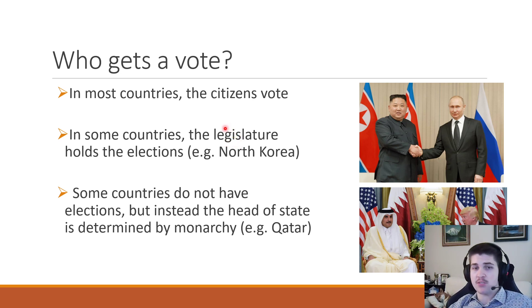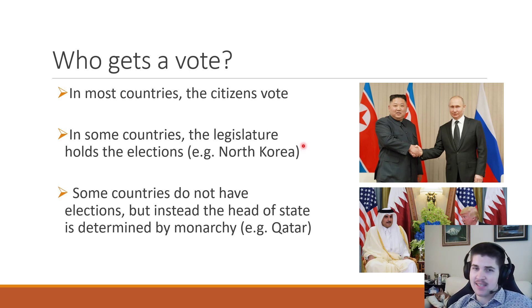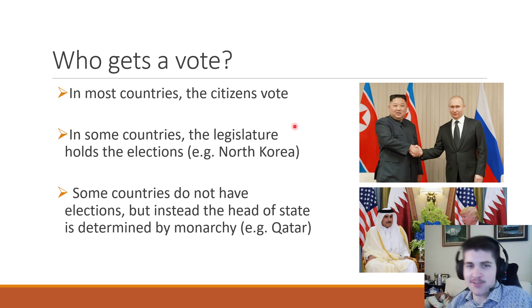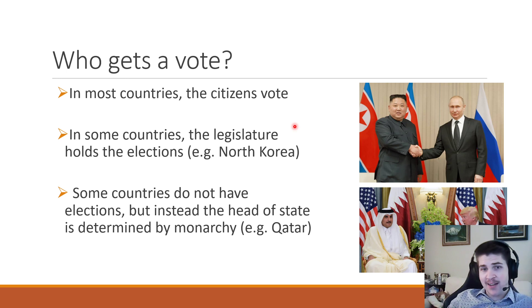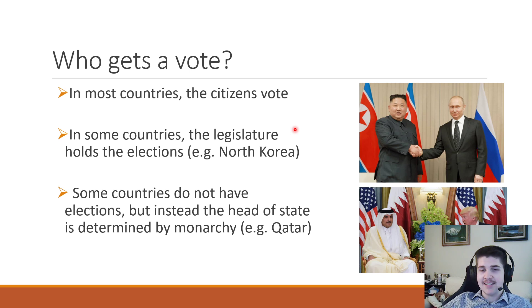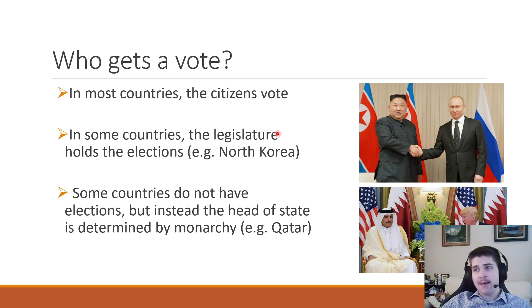In other countries it doesn't necessarily work the same way. Some countries' citizens don't vote — instead there's a legislature or a certain subset of people who actually get to vote. The idea of fairness is different in each society, and a lot of times such situations are really a sham — there is technically an election but it's guaranteed to come out to be the dictator or whatever. A lot of times elections can be held but not really be meaningful because there's no real choice.